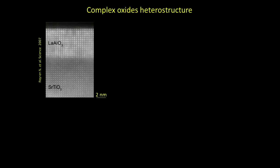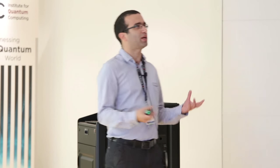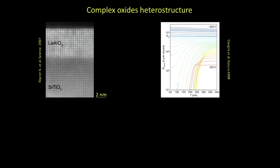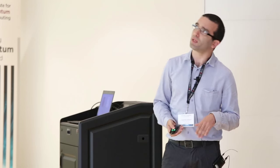Now let me switch gear to another type of system — a complex oxide heterostructure. Over the last years this system has generated a lot of interest. Perhaps the most popular system is lanthanum aluminate (LAO) grown on strontium titanate (STO). They managed to make atomically sharp heterostructures, and the interest arises from the fact that bringing together two band insulators, a 2D electron gas emerges at the interface. Even more than that, superconductivity has been observed, and you can tune the superconducting Tc with a back gate.